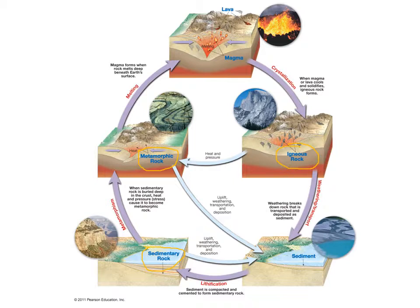Let's talk about igneous rocks first. Molten rock that is above ground is called lava; if that molten rock is below ground, it's called magma. If either of those cools — we call that cooling crystallization — it cools and solidifies from liquid molten rock into solid rock. That's what forms igneous rocks.